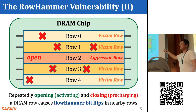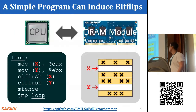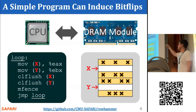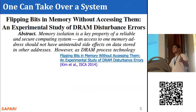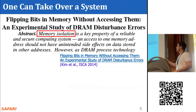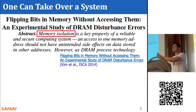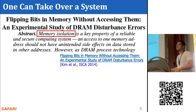The rows that contain bit flips are the victim rows. A simple program like the one shown can induce these bit flips in main memory. Prior work has shown that rowhammer is a widespread phenomenon affecting DRAM chips from many different vendors in the field. This is a problem because that code accesses one memory location and has unintended side effects on data in other memory locations — essentially breaking memory isolation.